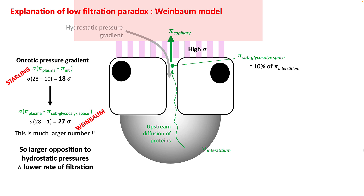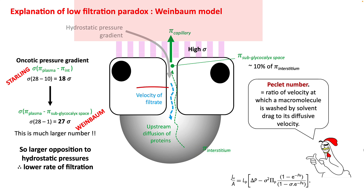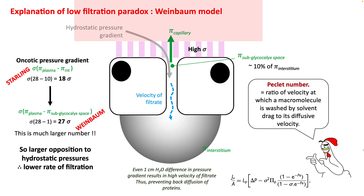The question arises: proteins, which are high in concentration in the interstitium, should be able to diffuse back into the sub-glycocalyx space. This does not happen because of the velocity of the filtrate. The Peclet number — the ratio of solvent drag to diffusion velocity — prevents interstitial proteins from leaking back into the sub-glycocalyx space, keeping oncotic pressure there very low. Even 1 cm of water pressure difference results in very high filtrate velocities, thus preventing back-diffusion of proteins.